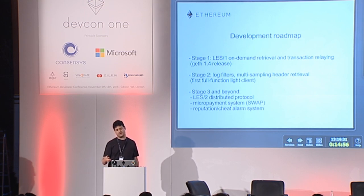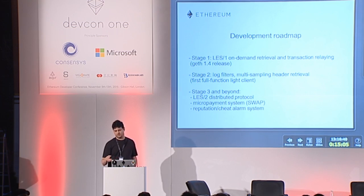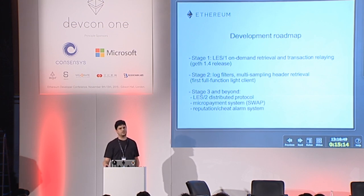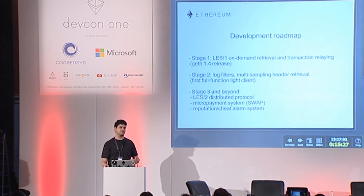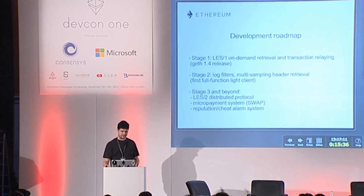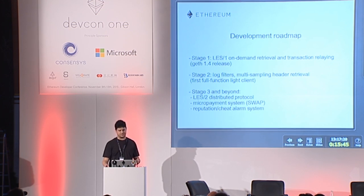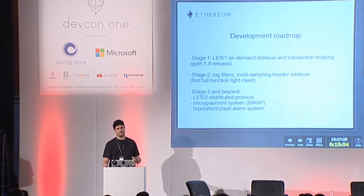Finally, to conclude my presentation, I would like to give a quick roadmap of future developments. We have planned several stages of release. The first stage, which will hopefully be ready pretty soon, may be released in our next version of the Go Ethereum client. We will already be able to retrieve data on demand through the first version of the LES protocol, right now only from full nodes, and probably also be able to relay transactions. Stage 2 will reach full functionality, including the ability to process and filter logs, and probably multi-peer header retrieval for increased security will also be included.